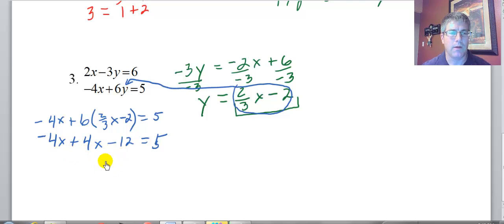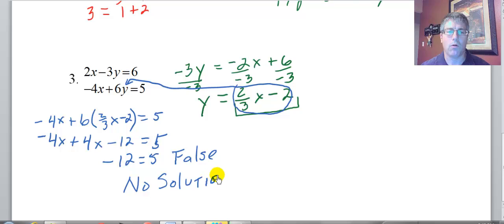So negative 4x plus 4x, I get negative 12 equals 5. That's false. Negative 12 never equals 5. In this particular sample problem, I didn't find an ordered pair x and y. This answer is no solution. There is no ordered pair that works to satisfy both this first equation and the second one.